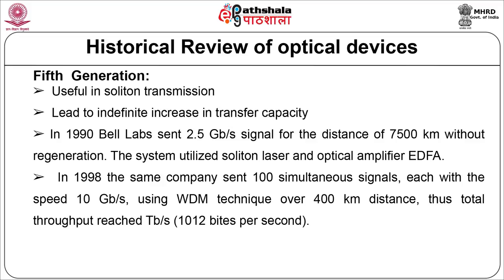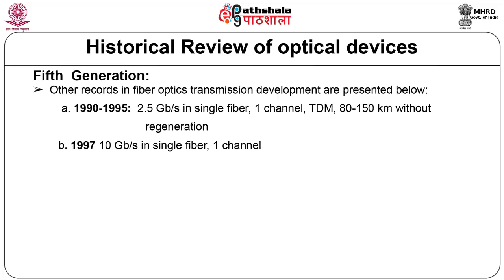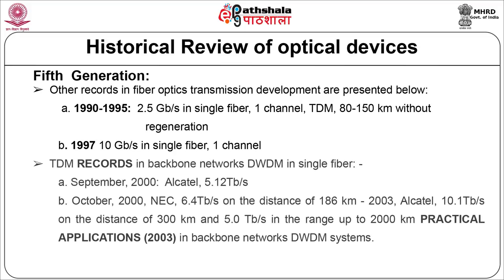Thus the total throughput reached was 10^12 bytes per second. Other records in fiber optic transmission development: from 1990 to 1995, 2.5 GB in a single fiber, one channel TDM, over 80 to 150 km without regeneration. In 1997, 10 GB per second in single fiber single channel TDM. In September 2000, Alcatel achieved 5.12 TB per second; in October 2000, NEC achieved 6.4 TB per second for a distance of 186 km. In 2003, 10.1 TB per second over 300 km, and 5 TB per second over a range of 2000 km.